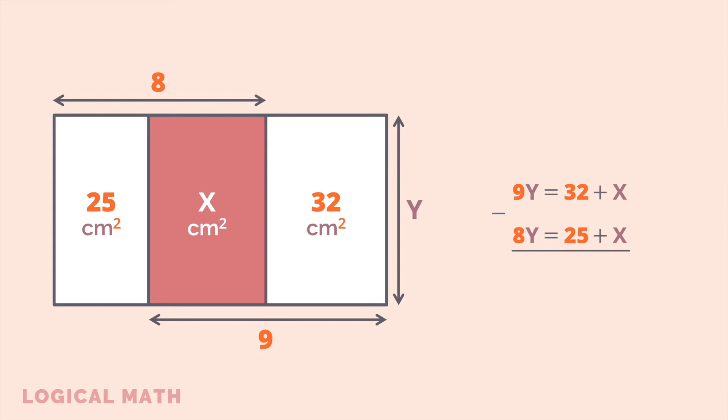Let's rearrange these two equations and subtract the second equation from the first one. On the left side we get 9Y minus 8Y, and 32 plus X minus 25 minus X on the right. The result of subtraction on the left is Y. On the right, the X terms can be canceled out, so the remaining expression is 32 minus 25, and it is equal to 7.